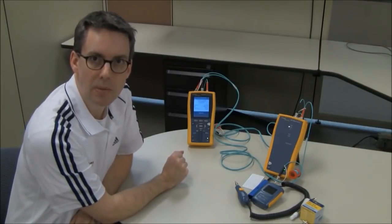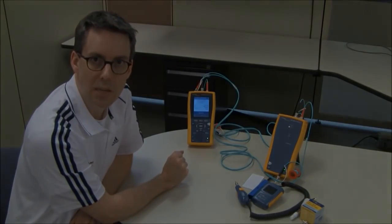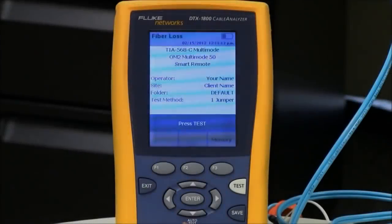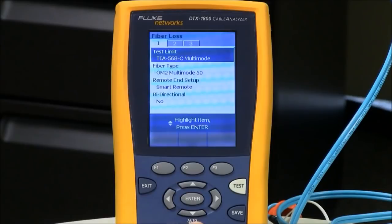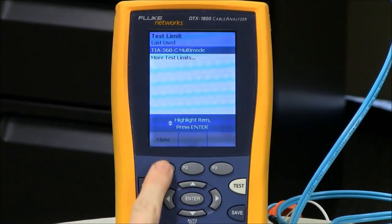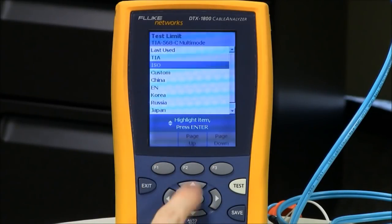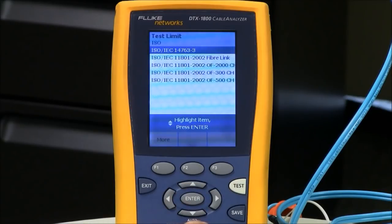Okay, let's talk about setting up the DTX cable analyzer. So, we'll rotate the dial to setup, and with fiber loss highlighted, we hit the Enter key, and we see our test limit is TIA. That's what I'm going to use today. If I was going to use another standard such as ISO IEC 14763-3, I would hit the Enter key, F1 more, and go and select ISO. And there's my standard.